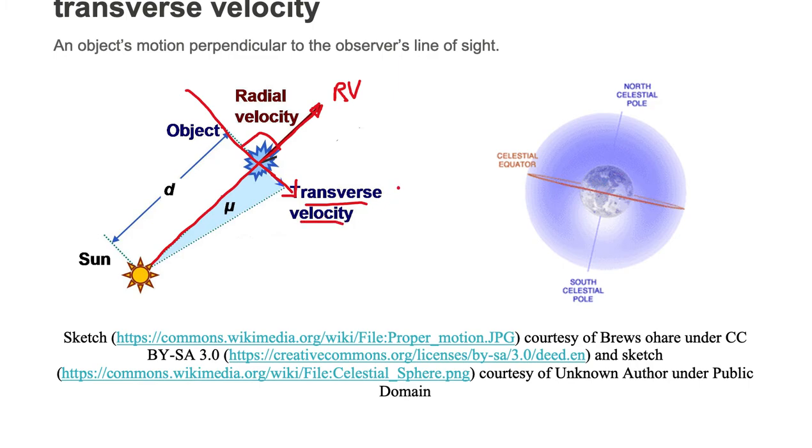Like the radial velocity vector, it has units of length divided by time, which is typically given in kilometers per second.